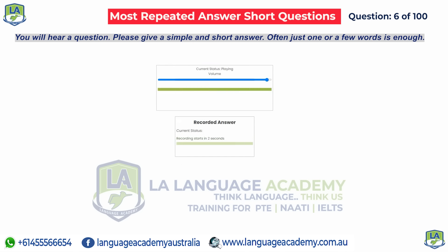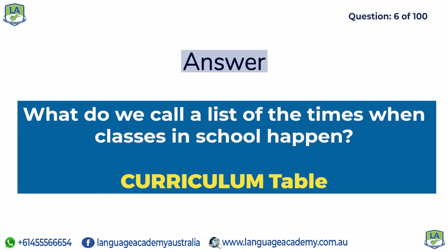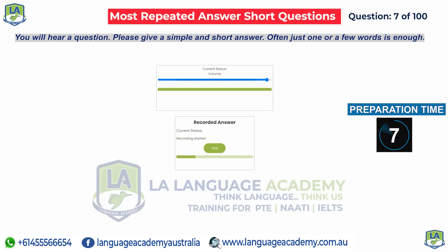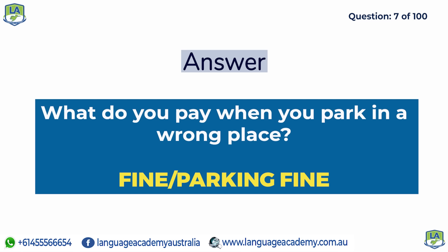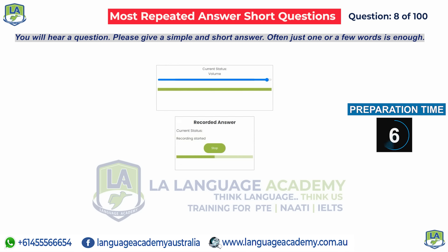What do we call a list of the times when classes in school happen? Curriculum table. What do you pay when you park in a wrong place? What do we call a large building with a square base and triangular sides? Pyramid.